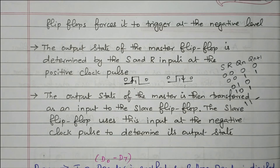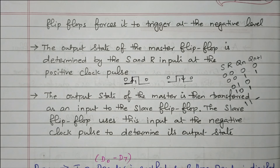In this video, we discussed what is meant by race around condition in flip-flop, followed by master-slave SR flip-flop — two SR flip-flops connected in series, with clock pulse given to the first (master) and inverted clock pulse given to the slave. The master SR flip-flop is triggered at the positive edge; the slave is triggered at the negative edge. We also discussed the truth table of the SR flip-flop. Subscribe the channel for more videos and notifications. The soft copy of this material is available in the drive; the link is given in the description box.